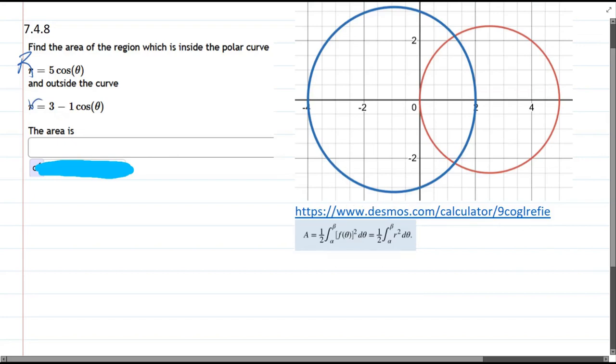When we use this area formula, it's the same beginning and end values, but we have big R squared minus small r squared d theta. I'm not going to do the calculus part. The bounds are really important.